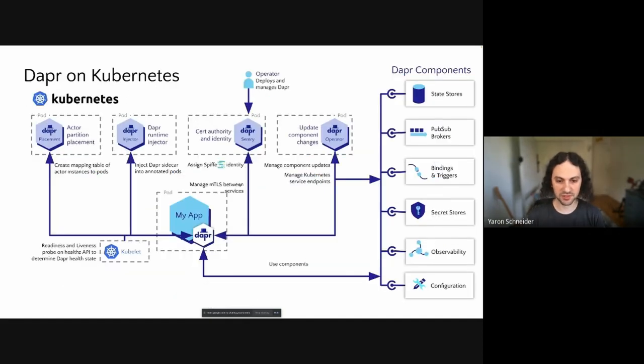On Kubernetes, Dapper has a pretty simple architecture. It has a control plane that is used to configure the data plane. So the control plane runs four main pods. These pods are the Dapper runtime injector, which is a sidecar injector. It'll inject the Dapper sidecar into your application once you've annotated your deployment YAML for it. The Sentry service is going to come up with Dapper. You can also add certificates for your application, which contain a Spiffe compliant identity.